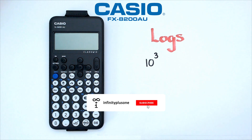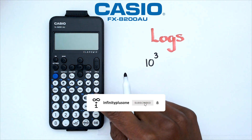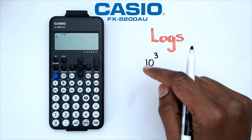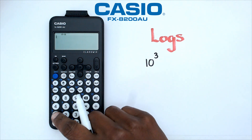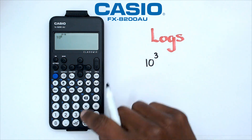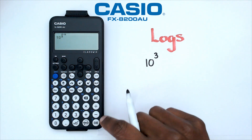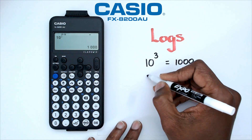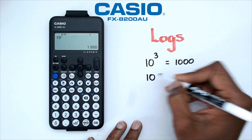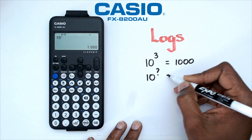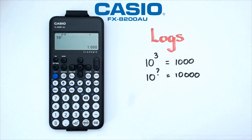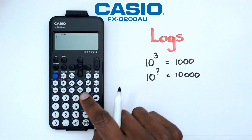In the previous video we were looking at powers. So if you think about it, to do 10 cubed we're going to get 10 to the power of 3, which equals 1000. Now let's say we want to go backwards — we want to find 10 to the power of what equals 10,000. We'd like to figure out what that question mark is.